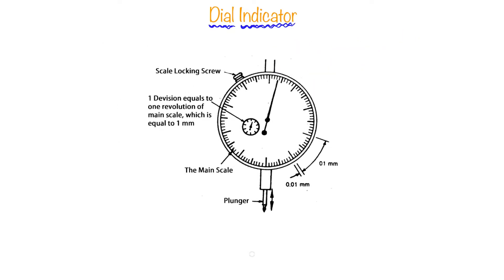These are the different parts of a dial indicator: the main scale, the plunger, and the locking screw. This little reading is equal to one revolution of the main scale. If this needle rotates one revolution, it will shift to the next division. Dial indicators can be made from gears and pinions or from levers. The working principles of these mechanisms are explained in the next videos.